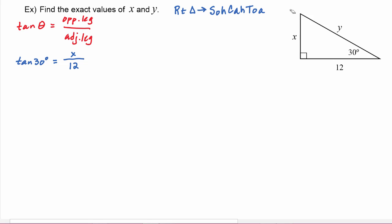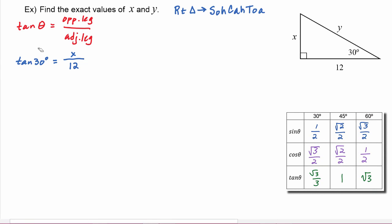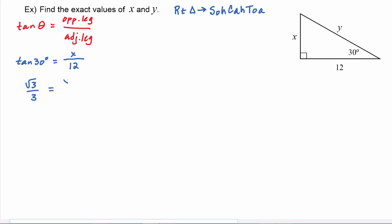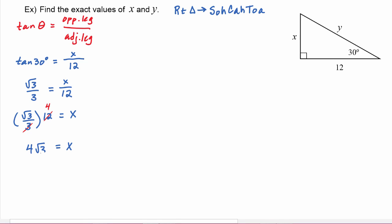Now remember that y is not an adjacent leg because y is not a leg — y is the hypotenuse. Using our special angle chart, we go to the tangent row and the 30-degree column, and we see that the tangent of 30 is equal to √3 over 3. So we replace that in our equation and set it equal to x over 12. To solve for x, we just need to cross multiply the 12, so we have √3 over 3 times 12, which equals x. The 3 in the denominator cancels with the 12 to become 4, and we find that x is equal to 4√3.